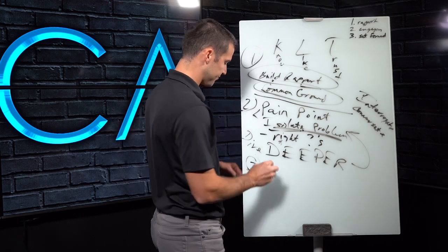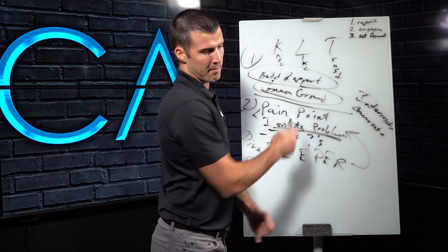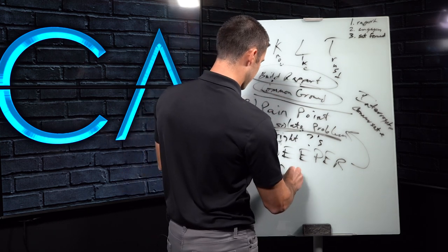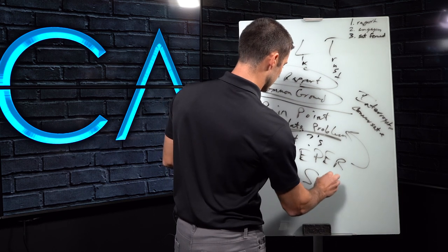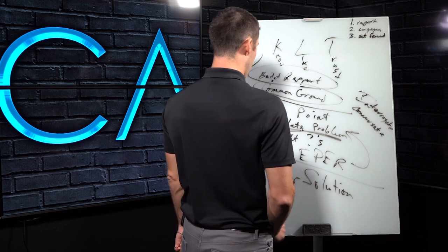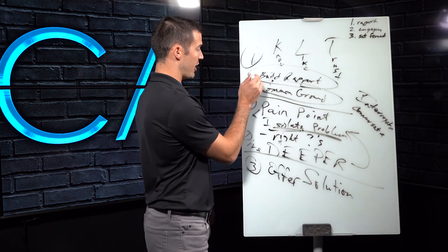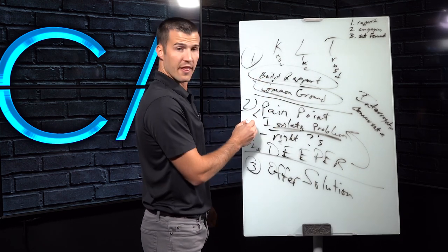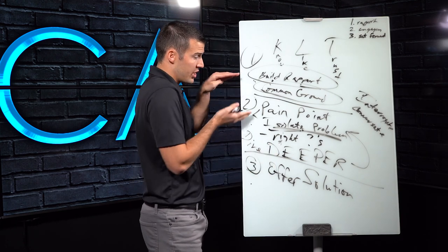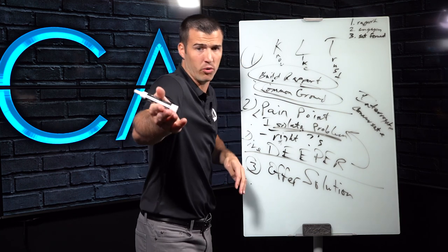The third piece, after building rapport and figuring out the pain point is offering a solution. This is where a lot of people struggle too, by the way. Some people are good at this. Some people are pretty good at this. Some people are okay at this. Normally, they're not great at all three, or they struggle with one, two, or maybe they struggle with all of them. I don't know.